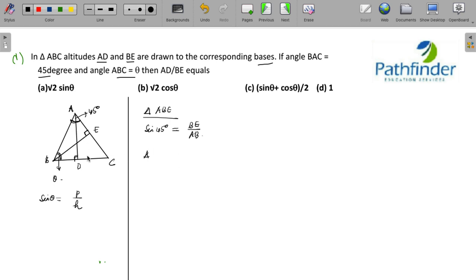Similarly, in triangle ABD, what do we have? Sine of angle B or theta must be equal to AD upon AB. So this is equation 1, this is equation 2. If you divide equation 1 by 2, what do you get?